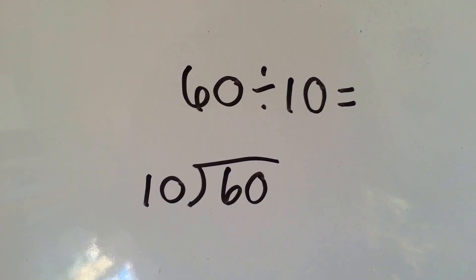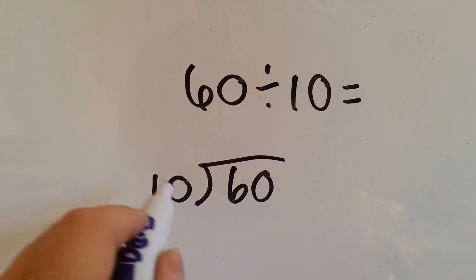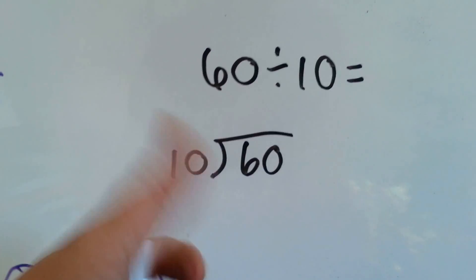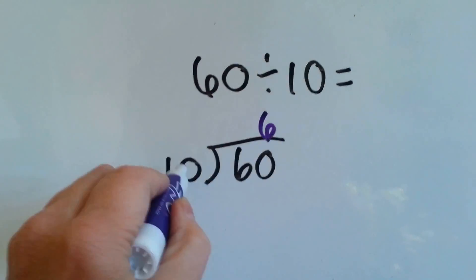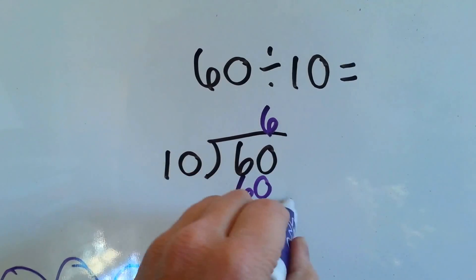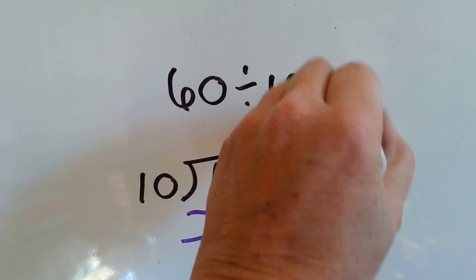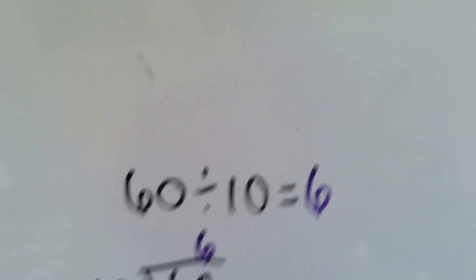60 divided by 10. 10 can fit into 60. 10, 20, 30, 40, 50, 60. 6 times. 10 times 6 is 60. We do our subtraction and get 0. 60 divided by 10 is 6.